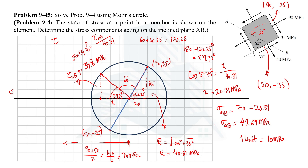We have now calculated the complete state of stress at plane AB. The shear stress is positive 34.8 MPa, meaning it is a clockwise shear stress at plane AB. The normal stress is positive 49.69 MPa, meaning it is tensile. This is how we can calculate the state of stress at any required plane using Mohr's circle. Thank you for watching.